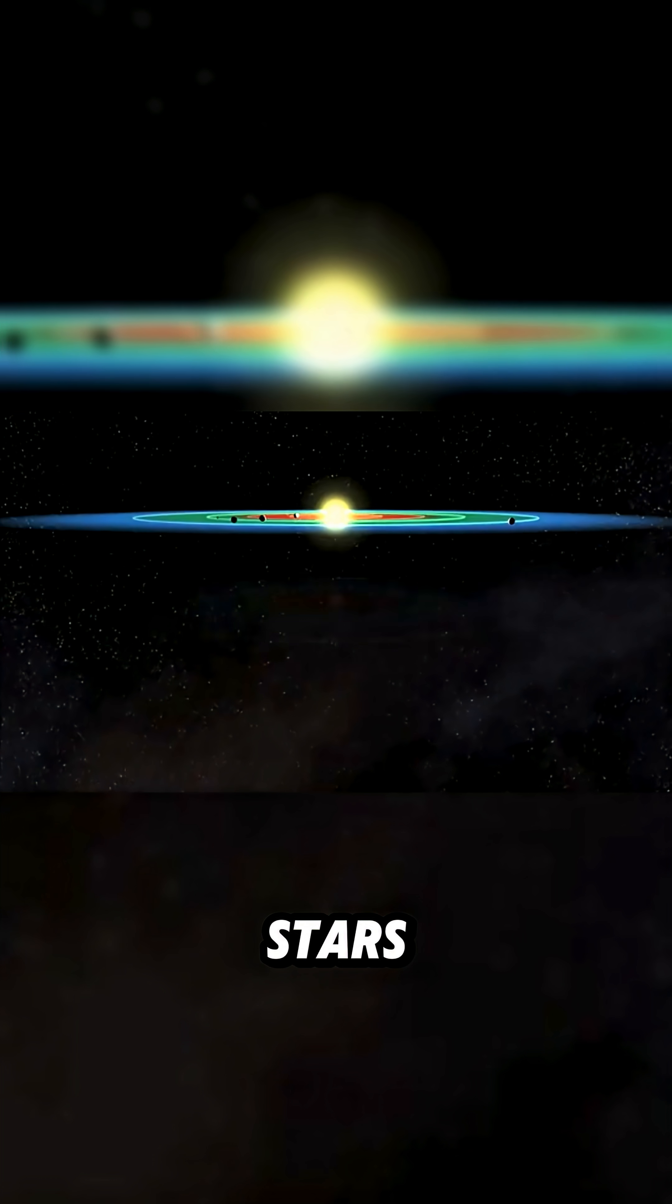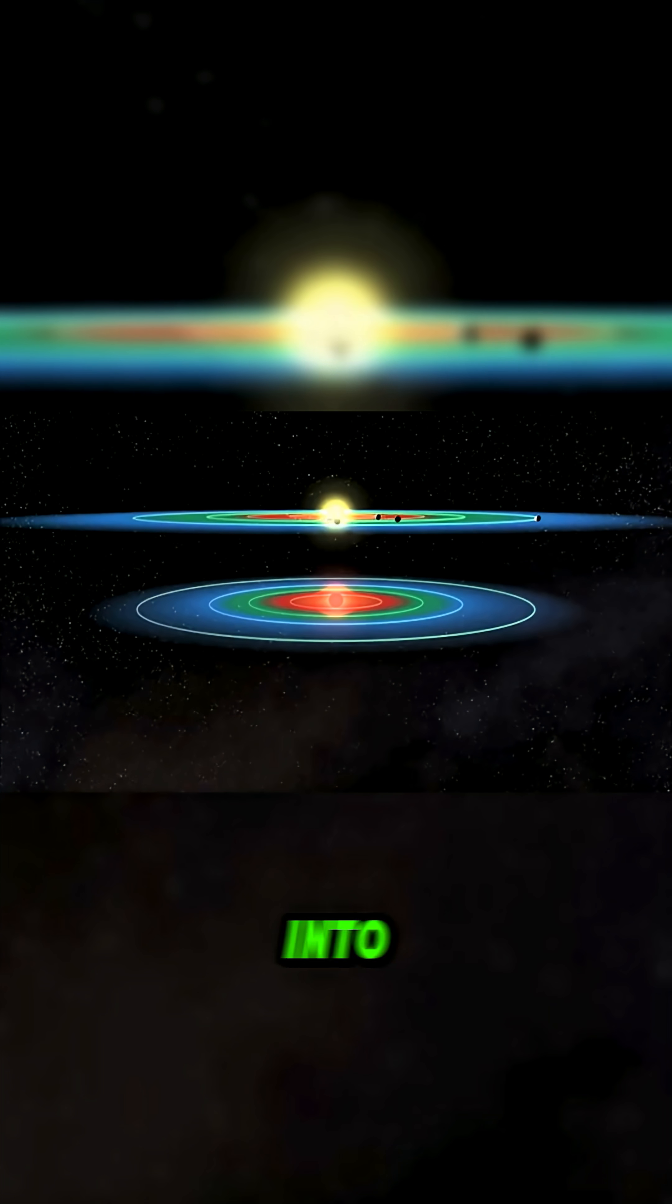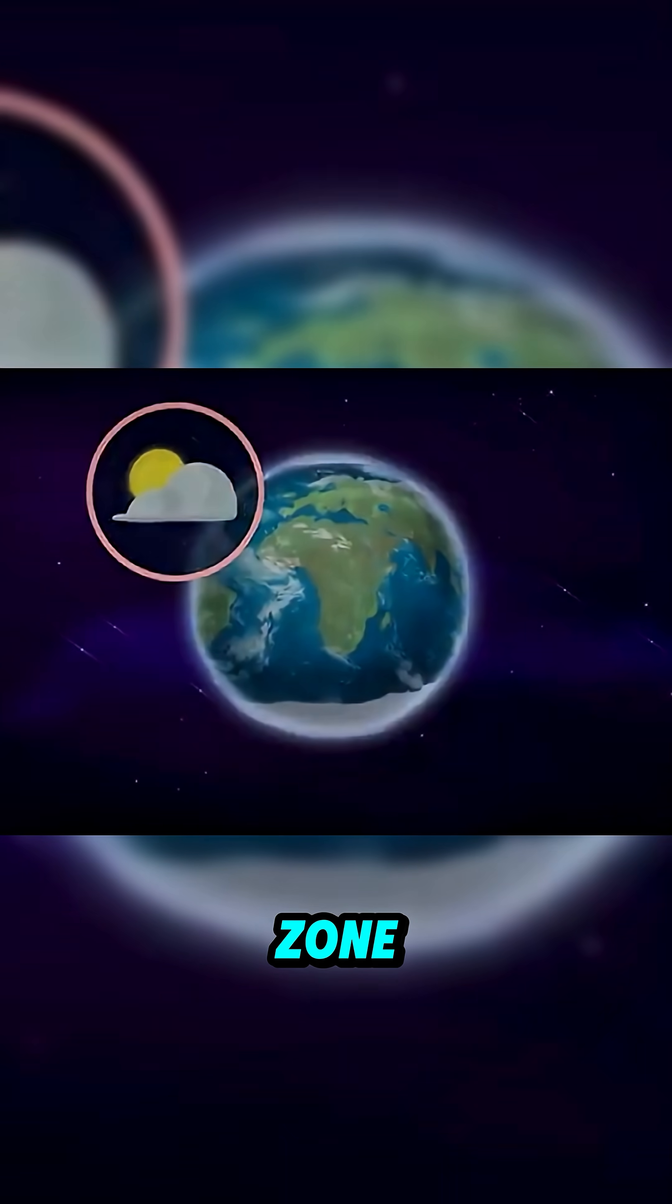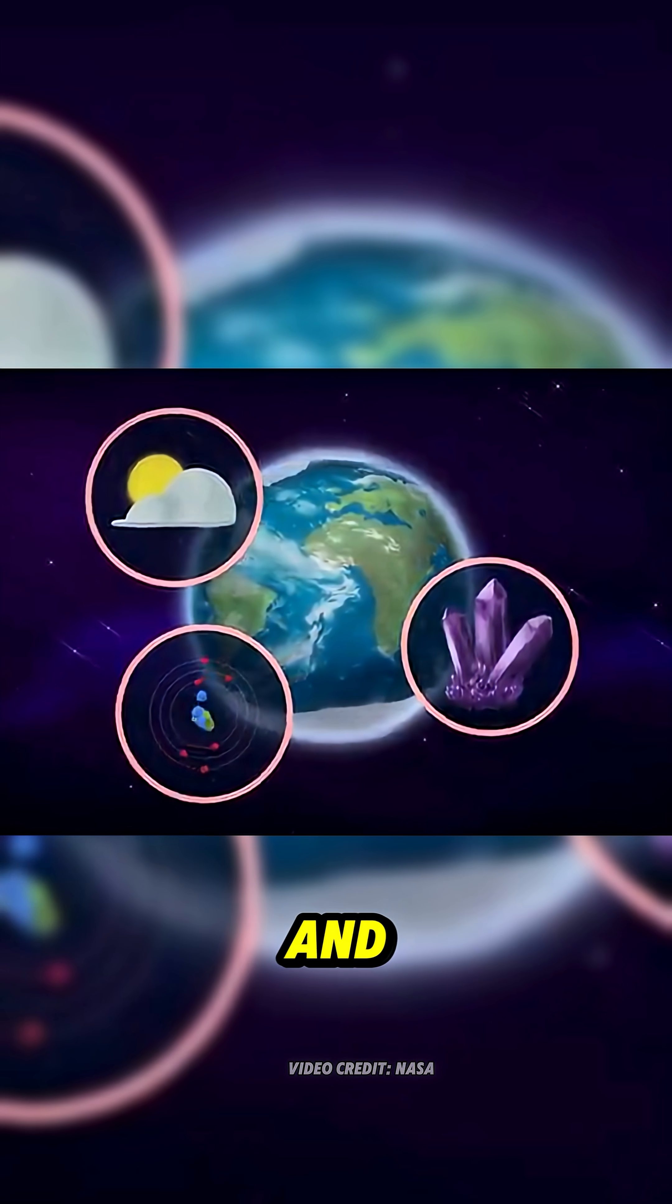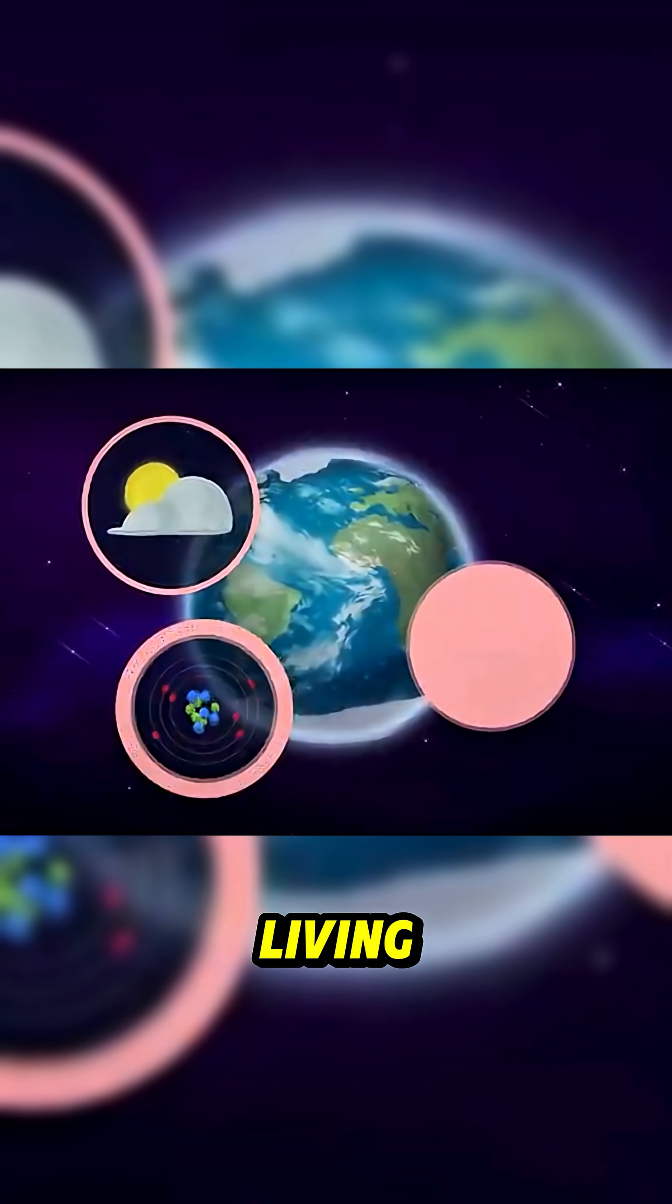Huge, bright stars push their zones far out into space. And just because a planet sits inside this zone does not mean it has life. It still needs an atmosphere, the right chemistry, and a stable environment to support living things.